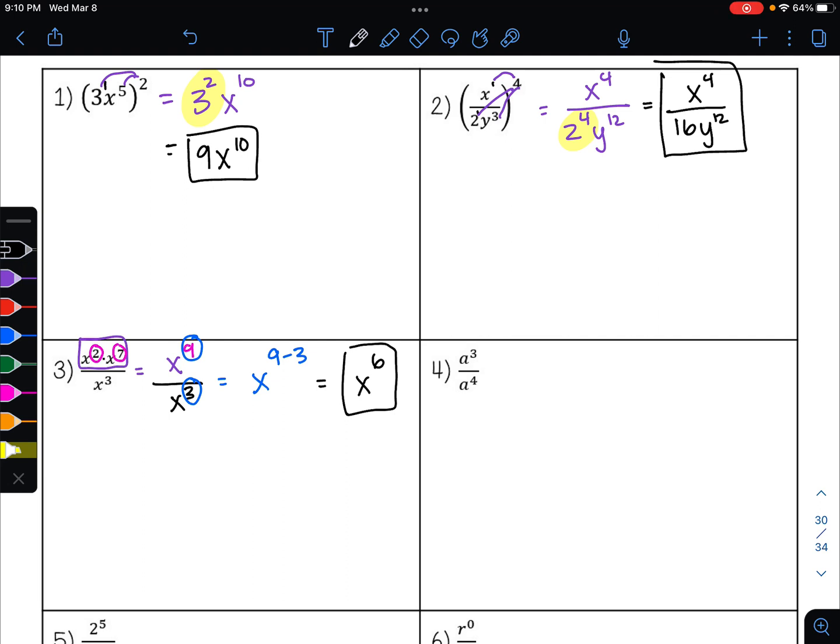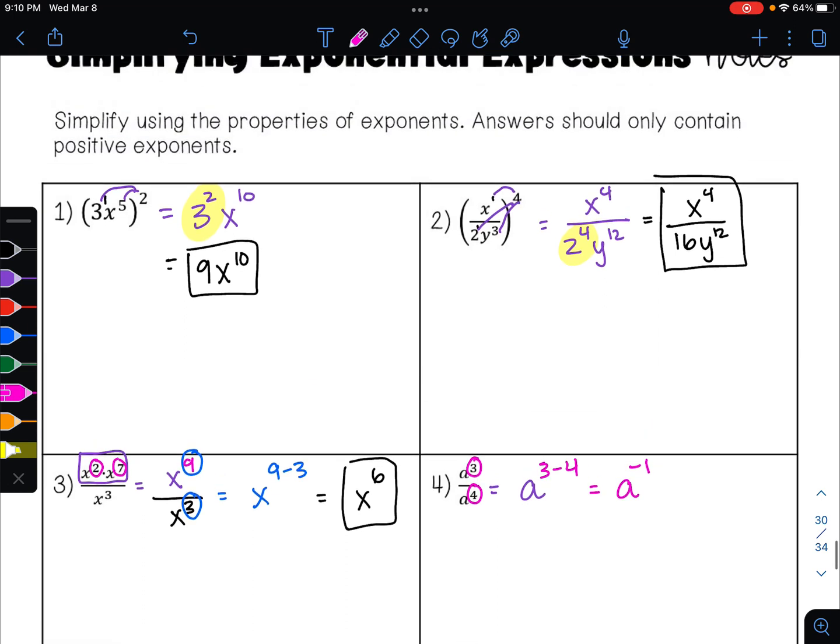On example 4, what is my base? A. I have a quotient. So I'm going to subtract my exponents. Numerator minus denominator. 3 minus 4 is negative 1. Now in our directions, it says answers should only contain positive exponents.